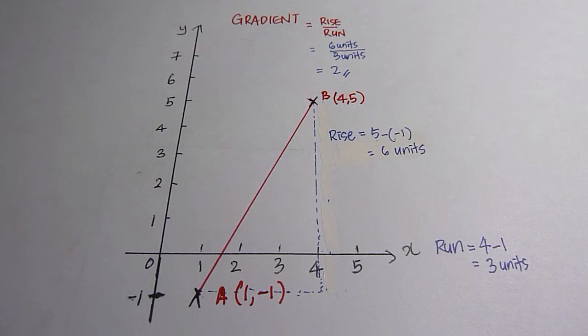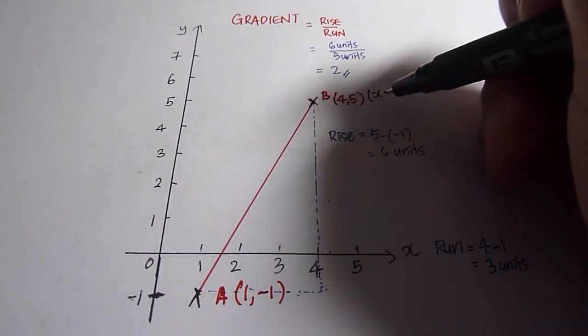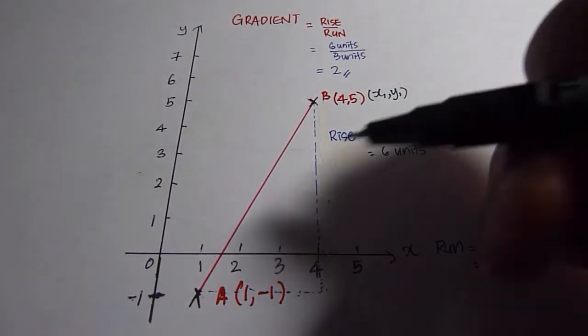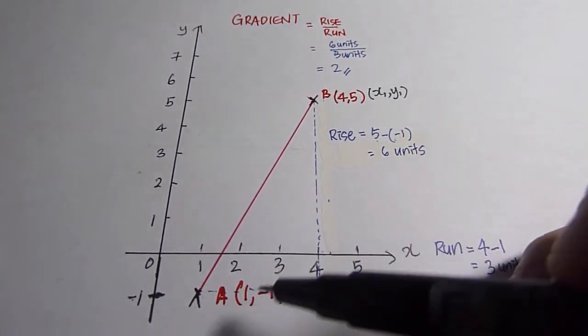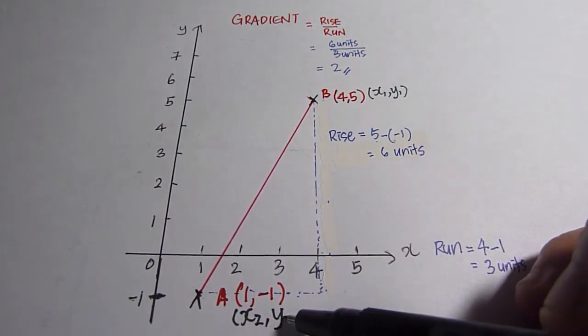On the other hand, what happens if we do not know the coordinates of the points? Let point B be x1, y1, and point A be x2, y2.